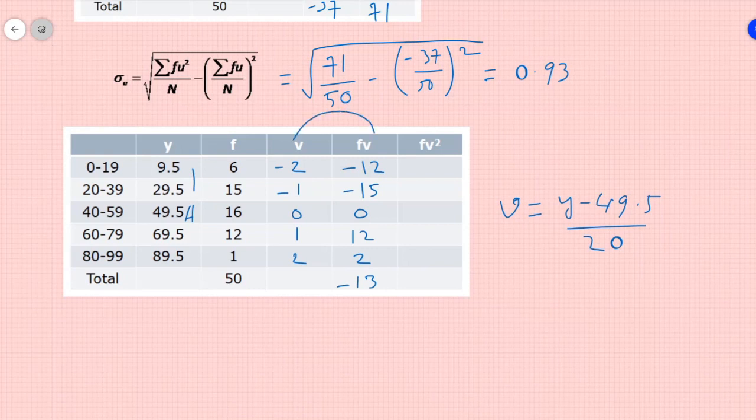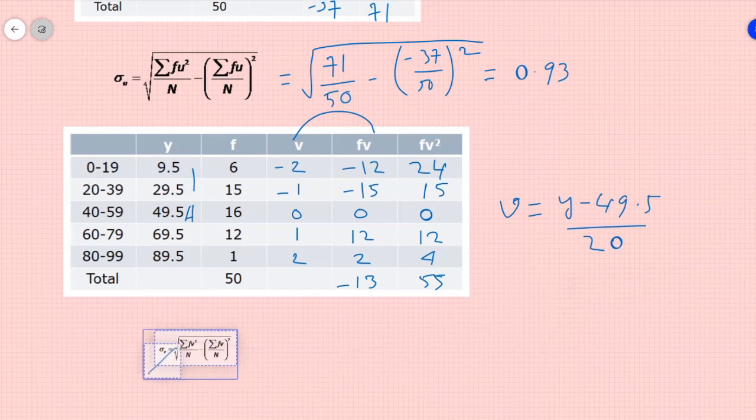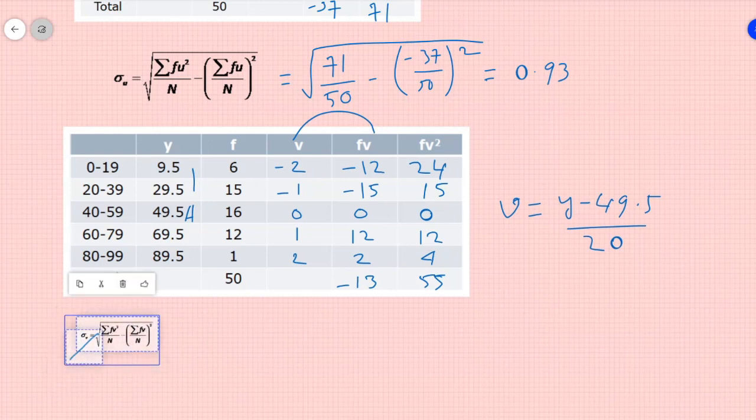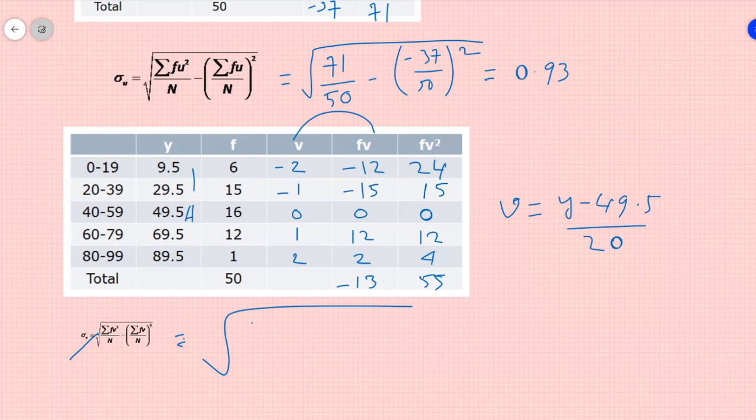Now, fv square is nothing but fv into v. So minus 2 into minus 12 will give me 24, 15, 0, 12, 4. So the total is 55. So again, if I use the similar formula we used for u, it is root over summation fv square 55 by 50 minus of minus 13 by 50 whole square. So if I solve this, I will get 1.02.